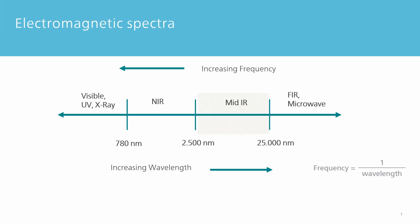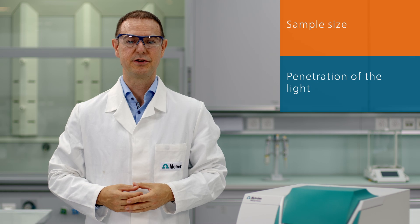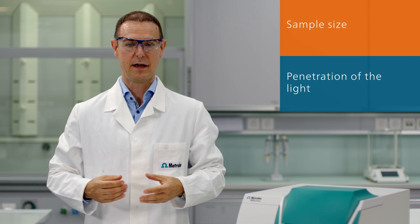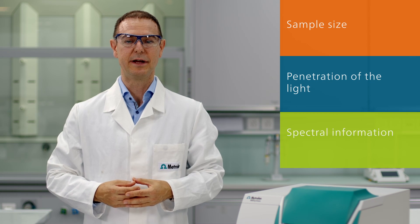Both IR and NIR are vibrational spectroscopies, meaning that parts of the molecules will vibrate when absorbing light at specific wavelengths. As the names imply, IR and NIR spectroscopy use different spectral ranges of light. This wavelength variation results in three key differences: the required sample size, penetration of the light into the sample, and the resulting spectral information.